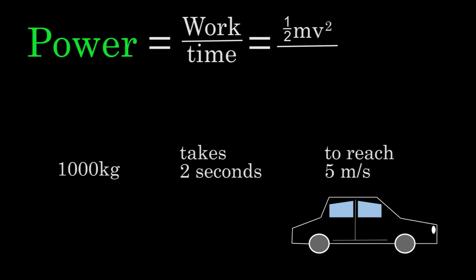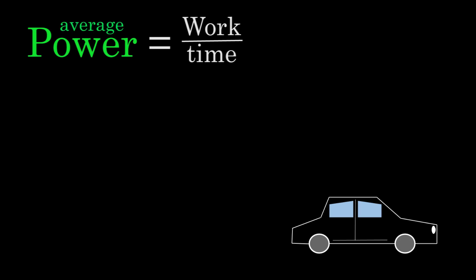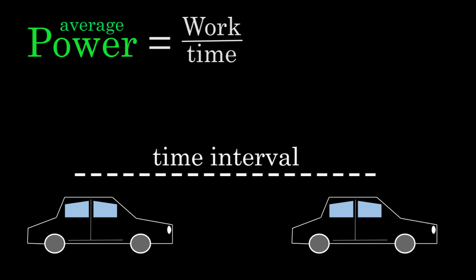In this case, the car was given kinetic energy and it took 2 seconds to give it that kinetic energy. If we plug in the values for the mass and the speed, we find that the engine had a power output of 6,250 watts. We should be clear that what we've really been finding here is the average power output. Because we've been looking at the total work done over a given time interval.